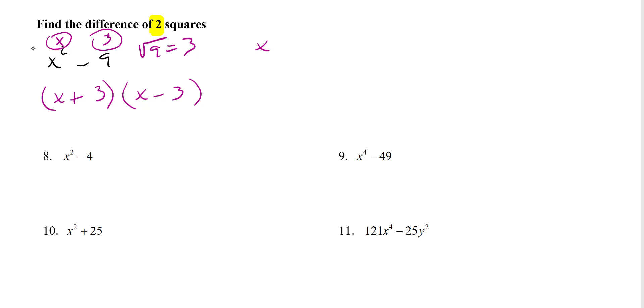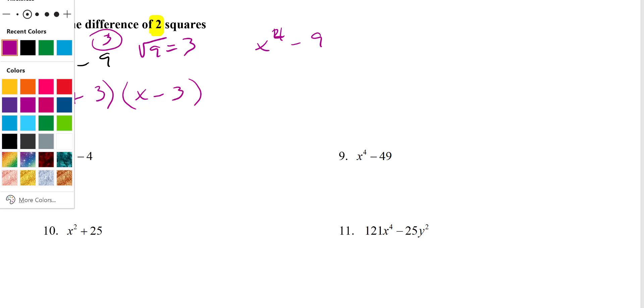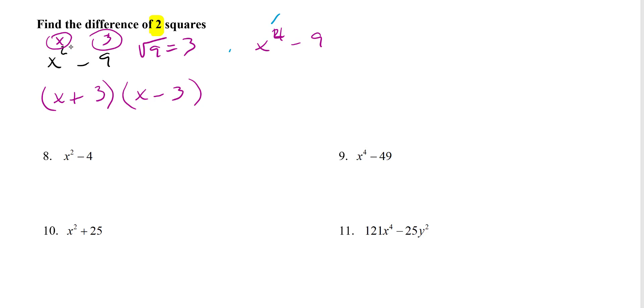If it was, let's say, almost the same problem, but x to the 4th minus 9, then on top you're going to write x squared and the square root of 9, which is 3. So you're gonna write x squared plus 3, x squared minus 3.